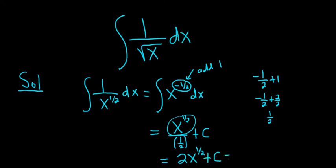And if you like, you could stop here, or you could rewrite x to the 1 half as a square root. So this is 2 times the square root of x plus our arbitrary constant of integration, c.